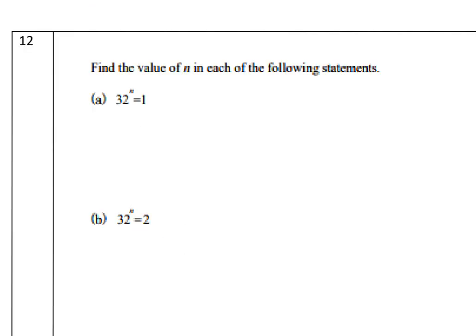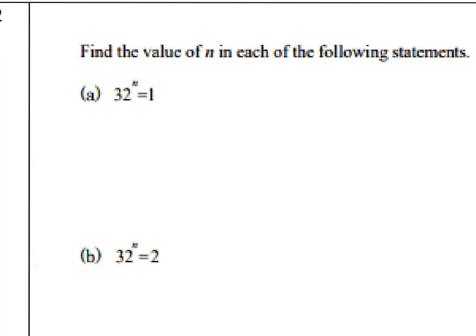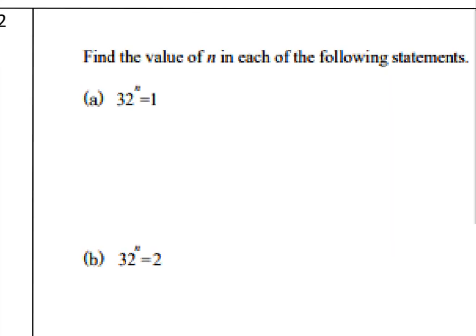Problem 11: solve 32^n = 1. We know a^0 = 1, so 32^0 = 1, therefore n = 0.